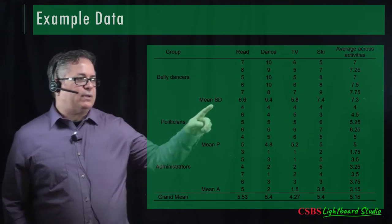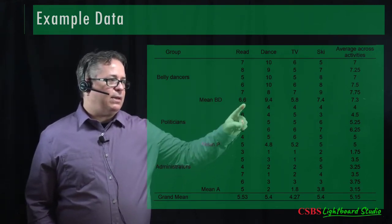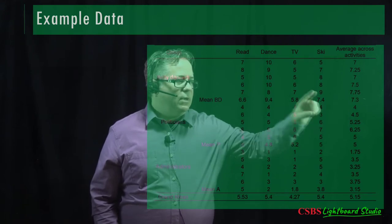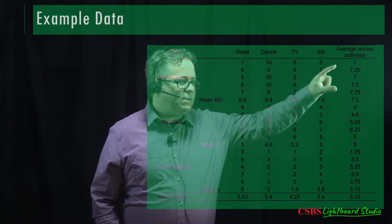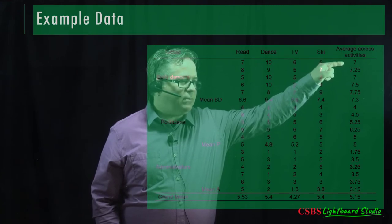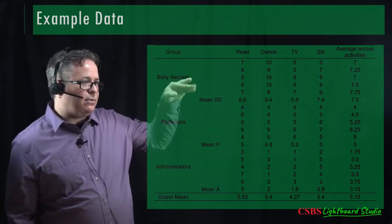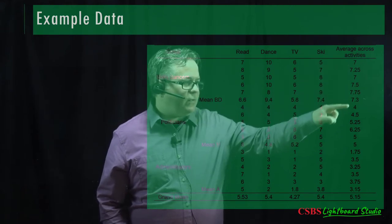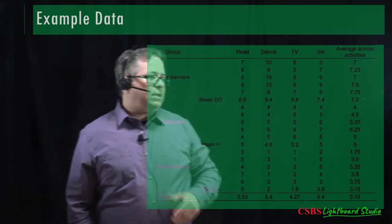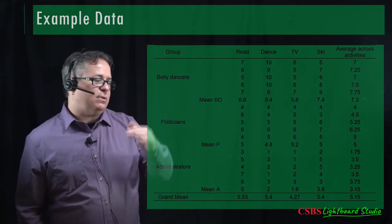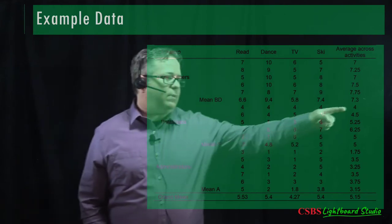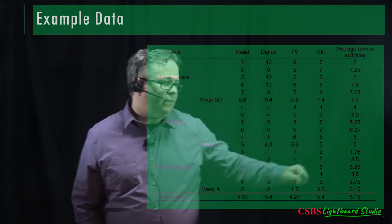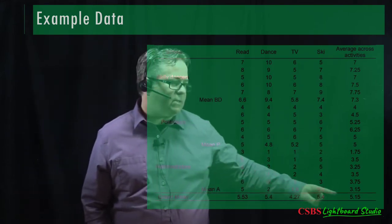You've got a couple different averages. This is the mean for belly dancers in reading, belly dancers dancing, TV, and skiing, and then the average across all four DVs for each person. The first belly dancer has an average of 7, the second 7.25. Averaging across all belly dancers you get 7.3; for politicians it's 5; for administrators it's 3.5.